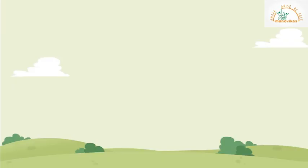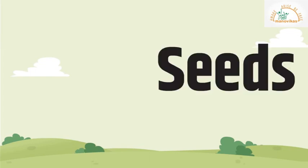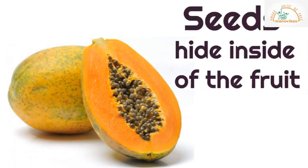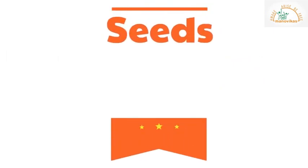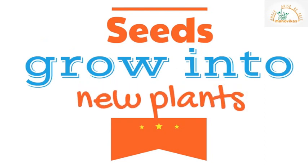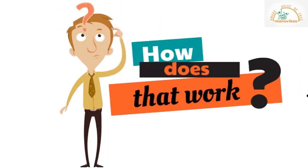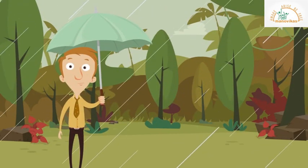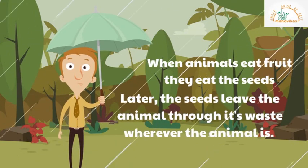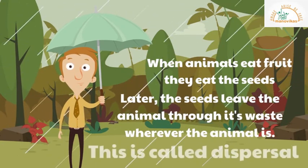The last part of the plant we are going to learn today are the seeds. Seeds hide inside of the fruit. Seeds have an incredible job — seeds grow into new plants. One way this happens is when animals eat the fruit, they eat the seeds. Later the seeds leave the animal through its waste, wherever the animal is. This is called dispersal.